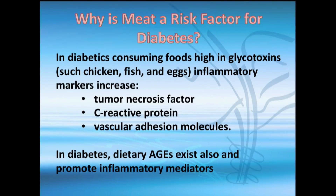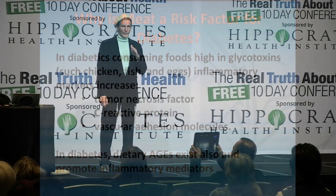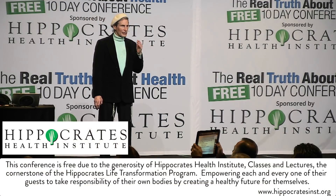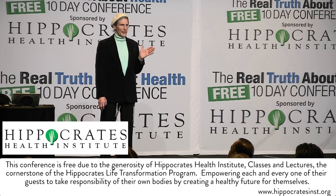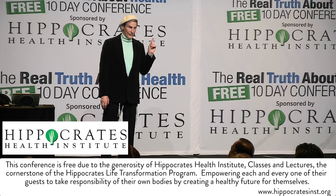Glycotoxins are another term for AGEs. Meat also increases inflammatory markers — tumor necrosis factor, C-reactive protein, and vascular adhesion markers. When I work with type 2 diabetics, I measure C-reactive protein. We see a 300% decrease in C-reactive protein within just three weeks, meaning a significant decrease in inflammation.